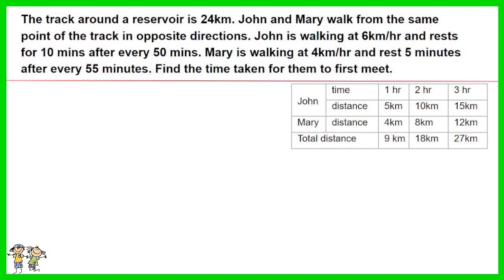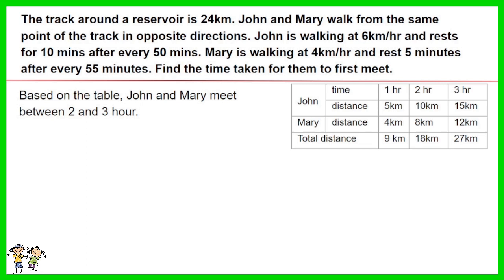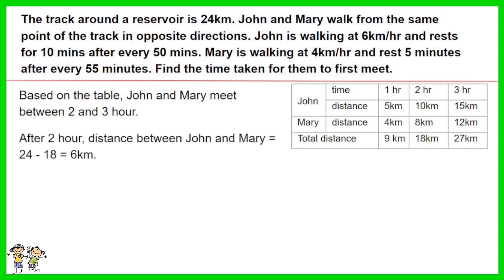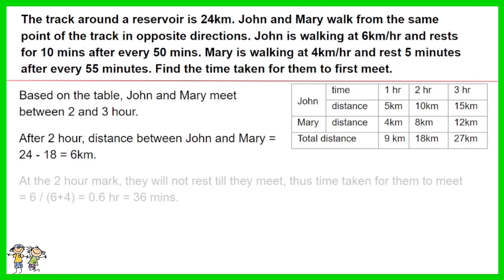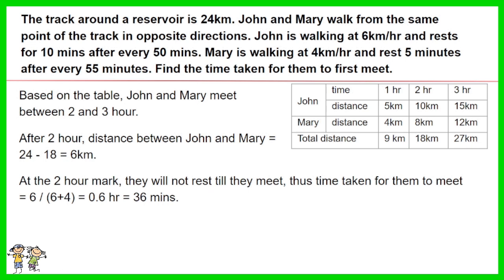For ease of understanding, please create a table as shown. Based on the table, John and Mary meet between 2 and 3 hours. After 2 hours, the distance between John and Mary is 24 minus 18, which is 6 kilometers. At the 2-hour mark, they will not rest until they meet. The time taken for them to meet is 6 divided by the combined speed of John and Mary, which is 10, giving 0.6 hours or 36 minutes. Hence they meet at 2 hours and 36 minutes.